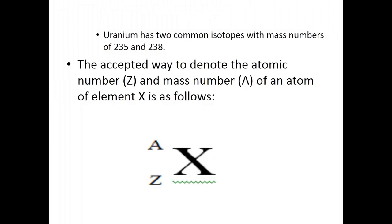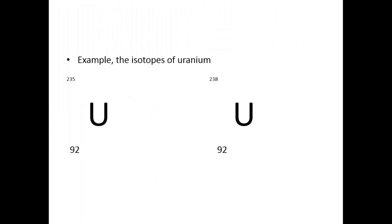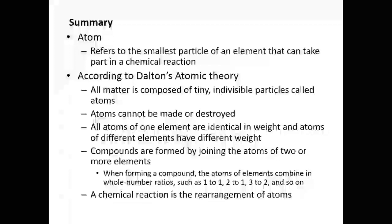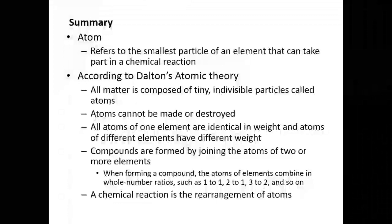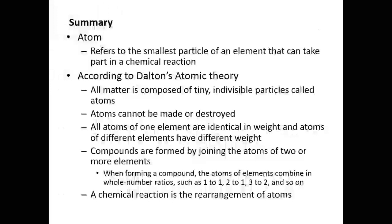The accepted way to denote the atomic number and mass number of an atom is nuclear notation. This is a short summary: atom refers to the smallest particle of an element that can take part in chemical reactions. According to Dalton's atomic theory: all matter is composed of indivisible particles called atoms, atoms cannot be created or destroyed, all atoms of one element are identical in weight, and atoms of different elements have different weights.